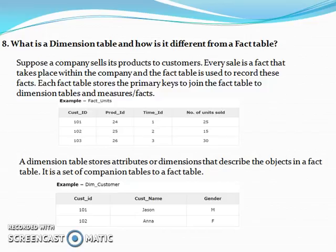What is the dimension table and how is it different from a fact table? If you take any schema like star schema or snowflake schema, we will have dimension tables and fact tables. We should know what the fact table and dimension table are, and how data flows from the dimension table to the fact table.